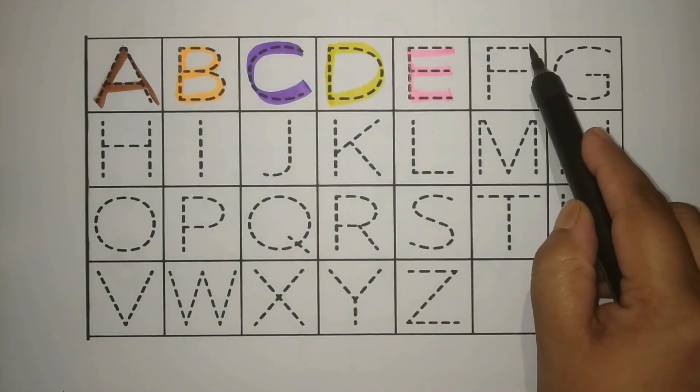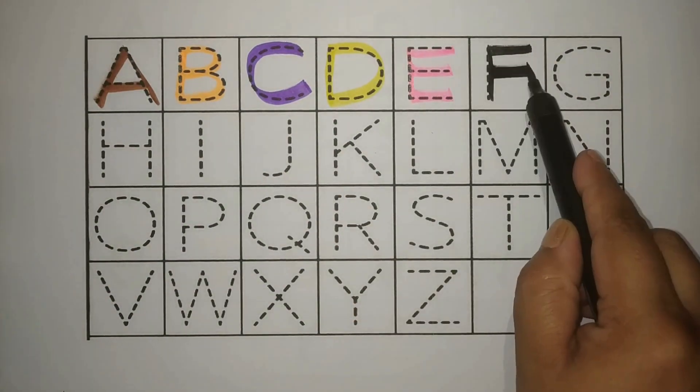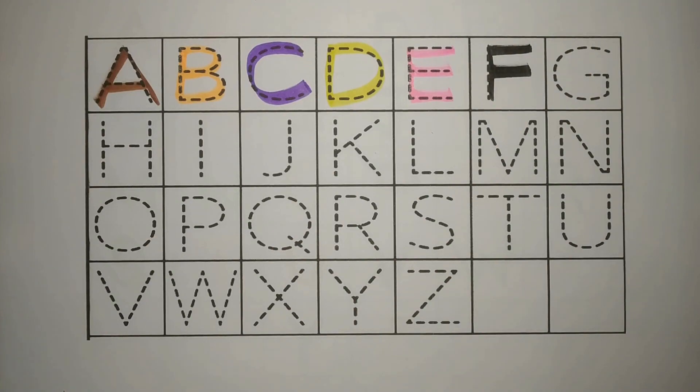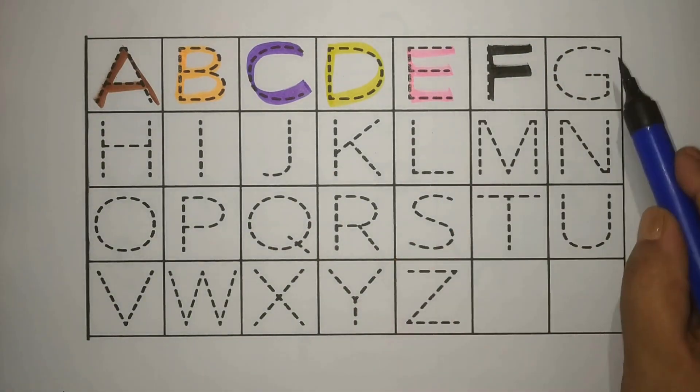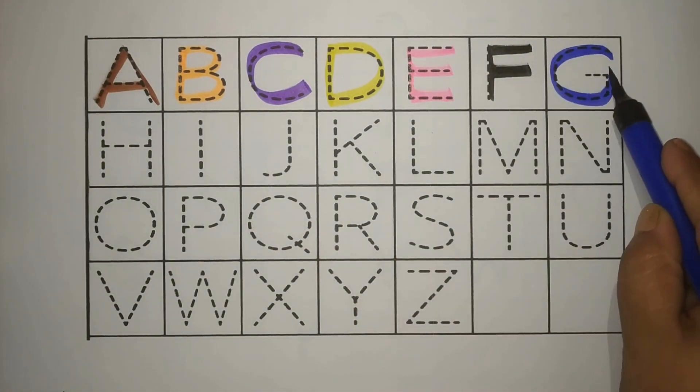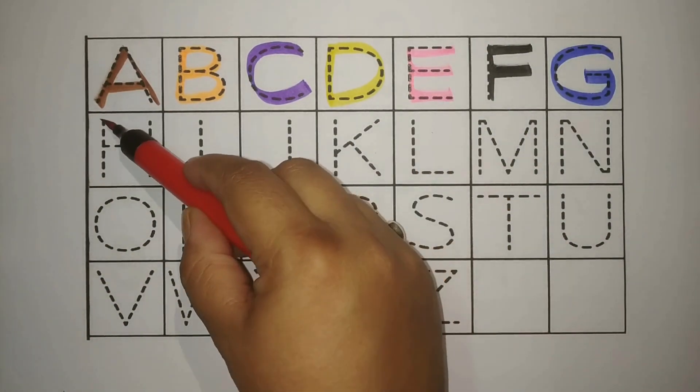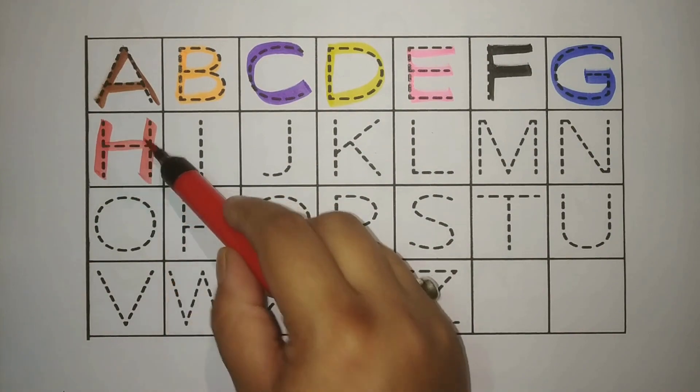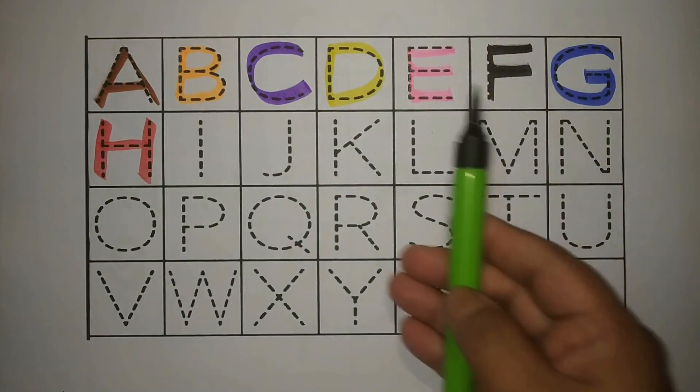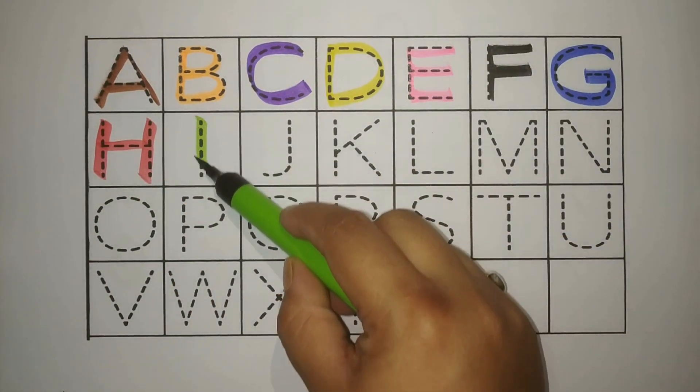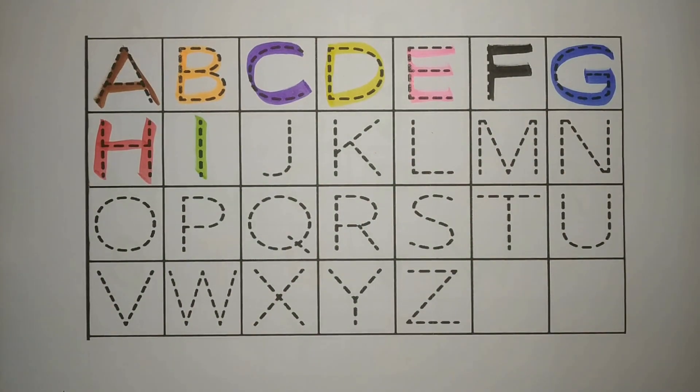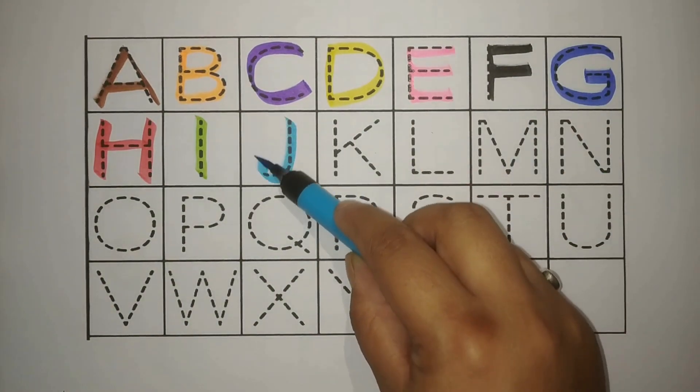Black F, F for Frog, Mendag. Blue G, G for Grass, Ghaz. Red H, H for Hut, Jopdi. Green I, I for Ink Pot. Blue J, J for Jug.